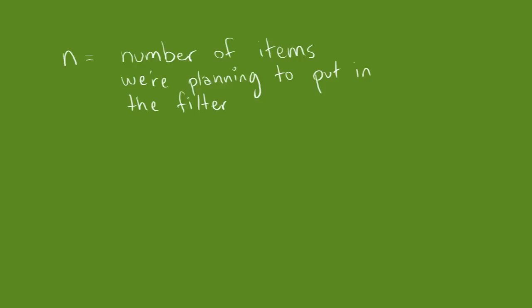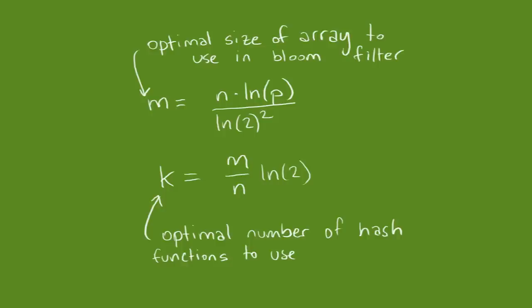Based on the number of items we're planning to put in the filter and the acceptable probability of a collision, we can determine the optimal bloom filter size and number of hash functions to use using mathematics.